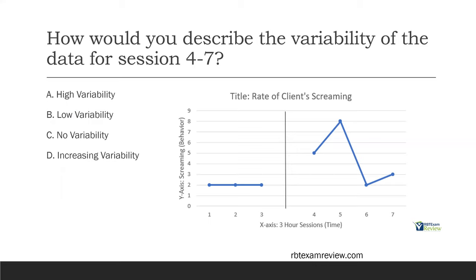What about answer choice D — increasing variability? When we're talking about variability, we're usually talking either high, low, or none. When we use terms like increasing and decreasing in visual analysis, we're talking about trends. You can have increasing trends or decreasing trends, but you're going to have high, low, or no variability. The answer here is high variability.